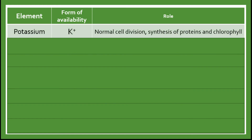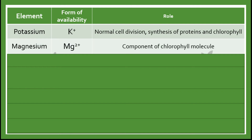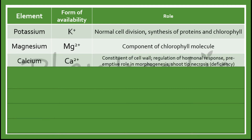Potassium is usually involved in the normal cell division, synthesis of proteins and chlorophyll. Magnesium is a component of the chlorophyll molecule. Calcium is the constituent of the cell wall, involved in the regulation of hormonal response, and plays a preemptive role in morphogenesis. The deficiency of calcium will lead to shoot-tip necrosis.